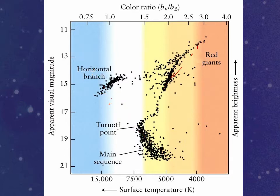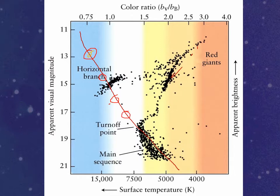We've got the main sequence running across here. The stars that were in the upper part have already died — those stars are no longer alive. We can work out that the stars lower down are still alive, while these stars right here are just now dying.